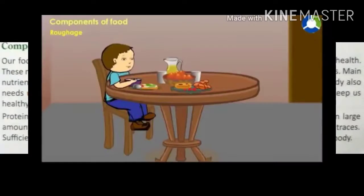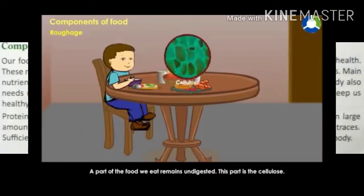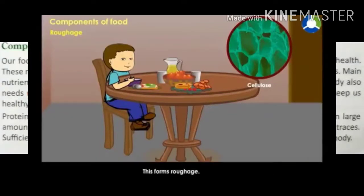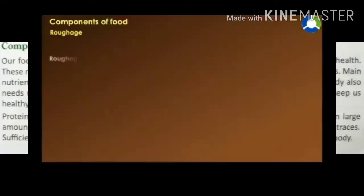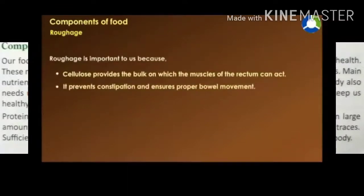Roughage: a part of the food we eat remains undigested. This part is cellulose. It is a carbohydrate which is largely present in the fruits and vegetables of our diet. This forms roughage. Roughage is important to us because cellulose provides the bulk on which the muscles of the rectum can act. It prevents constipation and ensures proper bowel movement.